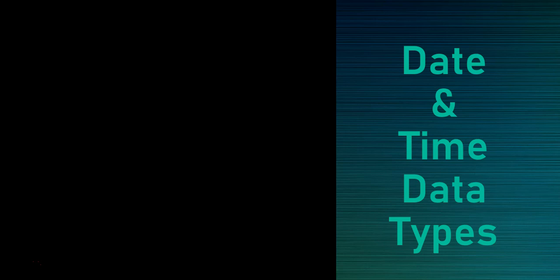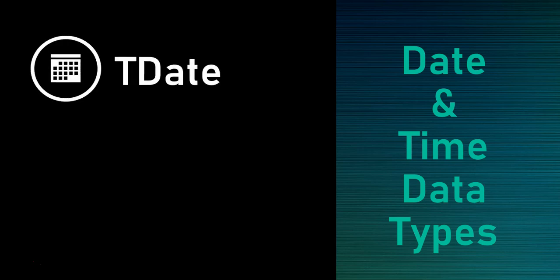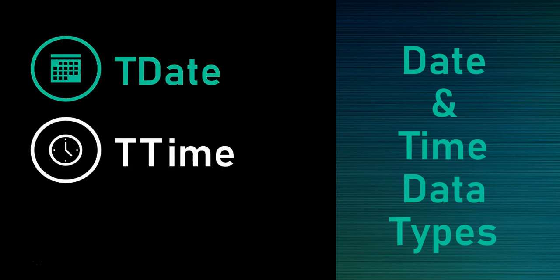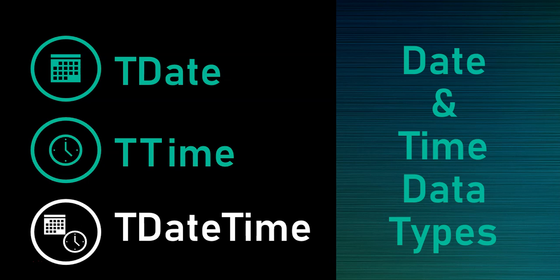We're going to discuss how we can store dates and times. There are special data types for this. The first one is TDate — you can make a variable of type TDate and that will store the date. We also have a TTime variable which stores the time, and then a TDateTime which stores both the date and the time.